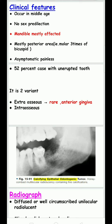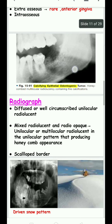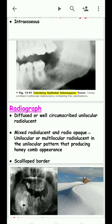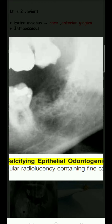The extra-osseous type is rare and occurs in the anterior gingival area. The intra-osseous type is common. Radiographically, there is a well-circumscribed unilocular radiolucency. Within the unilocular pattern, we see a mixed pattern of radio-opaque and radiolucent areas.